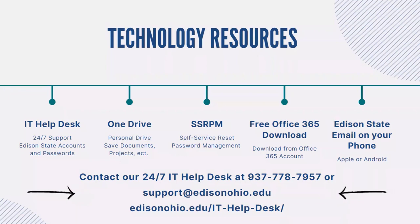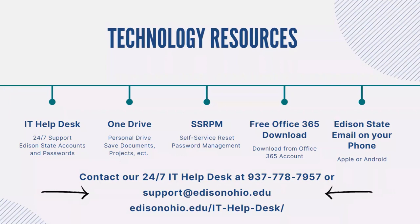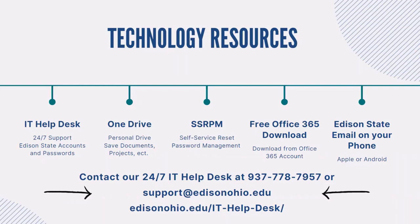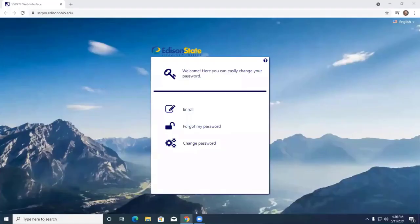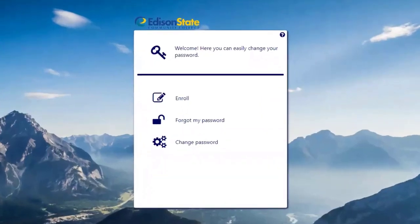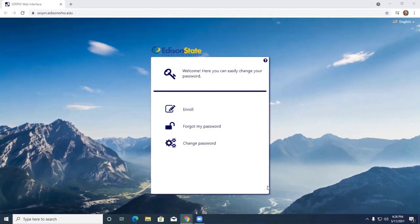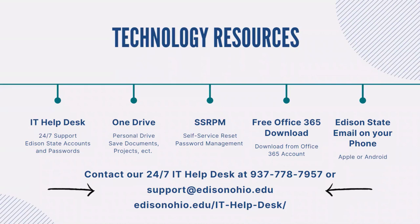Here at Edison State we have a 24/7 help desk you can reach out to if you need help with anything. All students have a free Office 365 account. One of its features is OneDrive, which allows you to access your files at any time, anywhere you have internet access, and easily collaborate with others using the share feature. We also have SSRPM, which allows you to reset your password by yourself at any time — but you must enroll in it first. You are required to change your password every 90 days, so we highly encourage you to enroll in SSRPM as soon as possible. Office 365 is a cloud-based service that holds your Edison State email, calendar, Word, Excel, and several other applications.